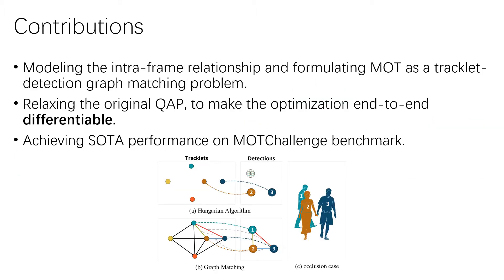So, we consider the edge in the graph to model the relationship among tracklets and intra-frame detections respectively. Thus, we formulate the MOT task as a graph matching problem between the detection graph and tracklet graph. To make the optimization end-to-end differentiable, we relax the original quadratic assignment problem into convex and continuous quadratic programming. Thus, the gradient can be calculated with the help of KKT conditions and the implicit function theorem.